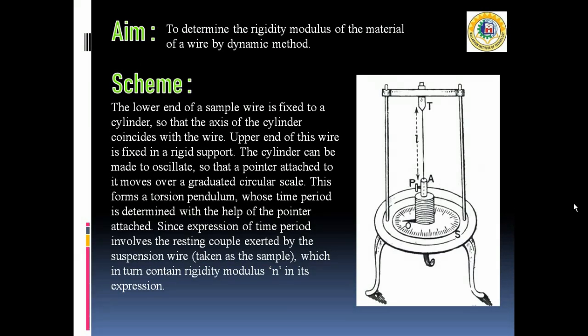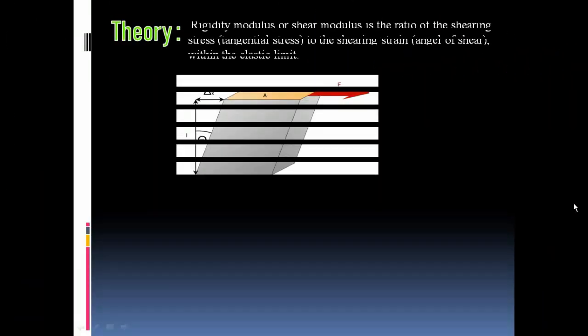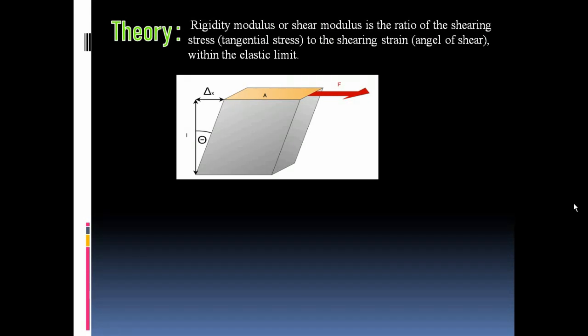The main theory behind this experiment is that the rigidity modulus is the ratio of shearing stress to the shearing strain within the elastic limit. In this figure, a block is undergoing a shearing stress and as a result its side is bent through an angle theta.